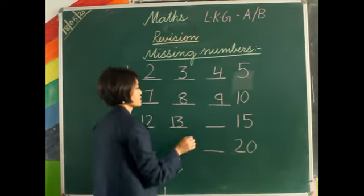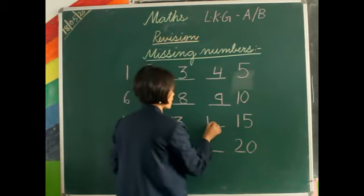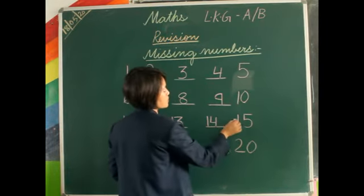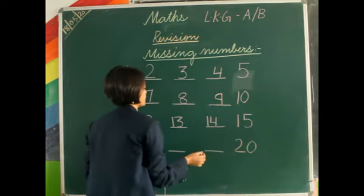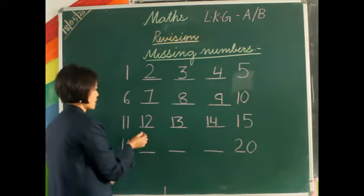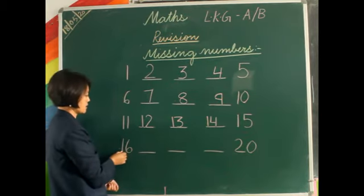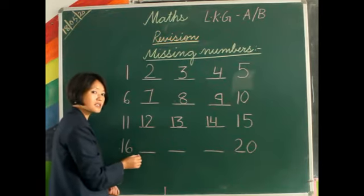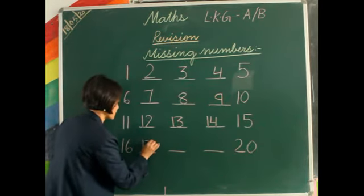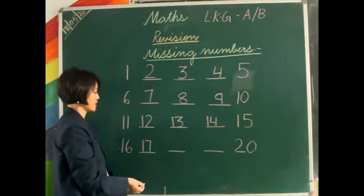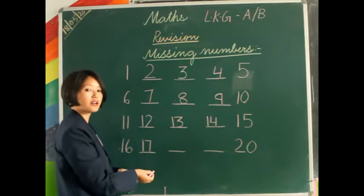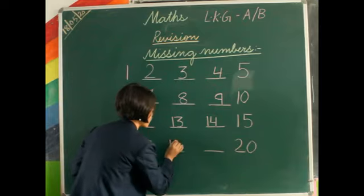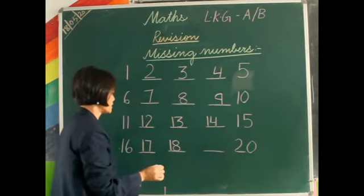After 13 is 14 — 1, 4: fourteen. After 14 is number 15. After 15 is 16 — that is 1, 6: sixteen. After 16 is number 17. After 17, which number will come? Number 18 — 1, 8: eighteen.